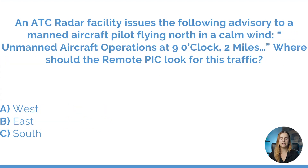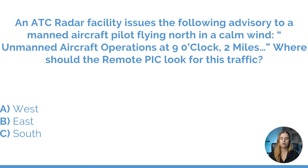An ATC radar facility issues the following advisory to a manned aircraft pilot flying north in calm wind: unmanned aircraft operations at nine o'clock, two miles. Where should the remote PIC look for this traffic? The key here is that it's asking where the remote PIC should be looking, not the manned aircraft. The manned aircraft is flying north on a 360 heading. ATC told them that unmanned aircraft operations are at nine o'clock — so their nine o'clock is to the west. However, the question asks where the remote PIC should look. Since that traffic is them, they would find the manned aircraft to the east, at their three o'clock.